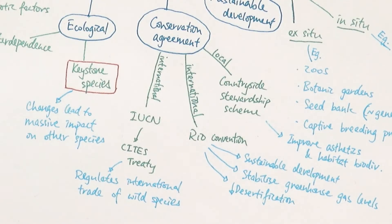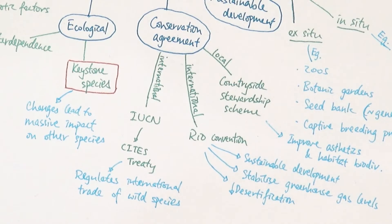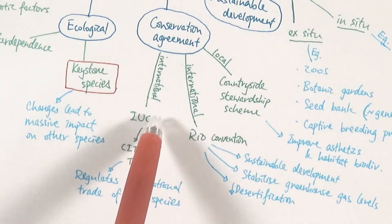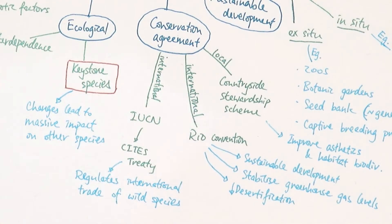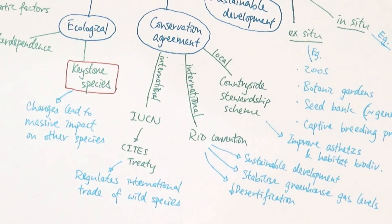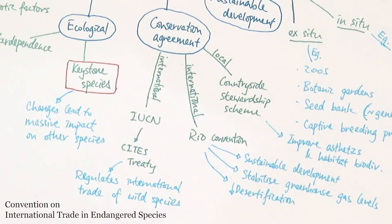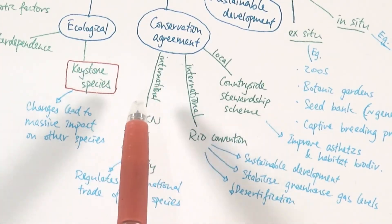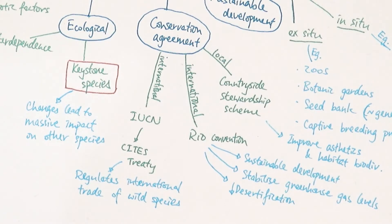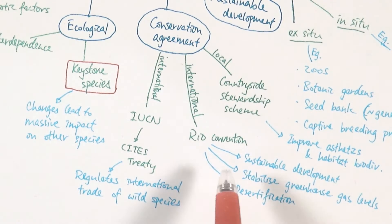You need to know three conservation agreements. First, the IUCN — International Union for the Conservation of Nature — which includes the CITES Treaty: the Convention on International Trade in Endangered Species. The key goal of CITES is to regulate international trade of wild species, since certain species are hunted to make products. Regulating that trade ensures they don't become endangered or extinct.